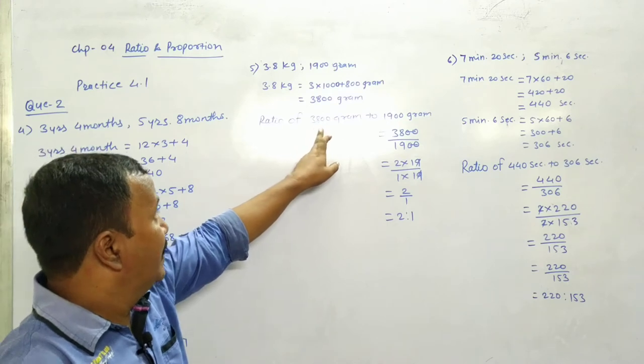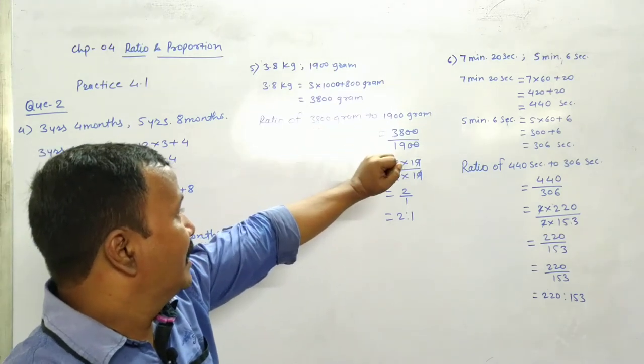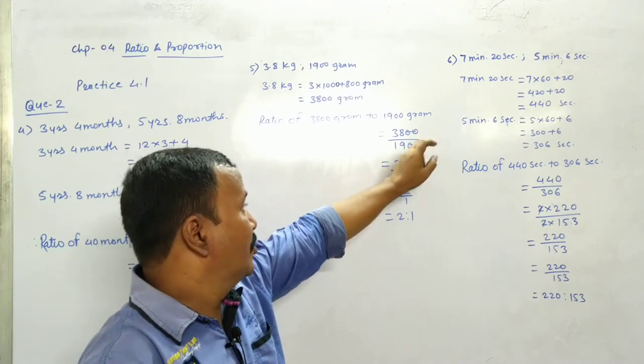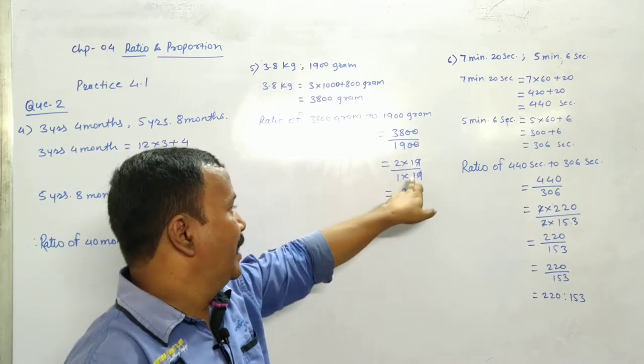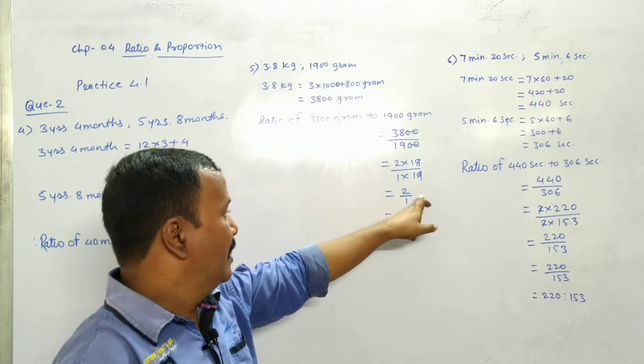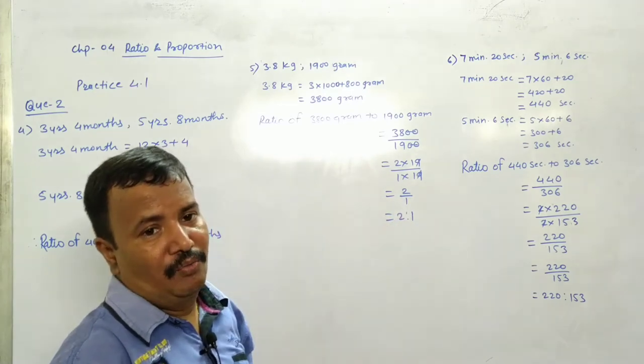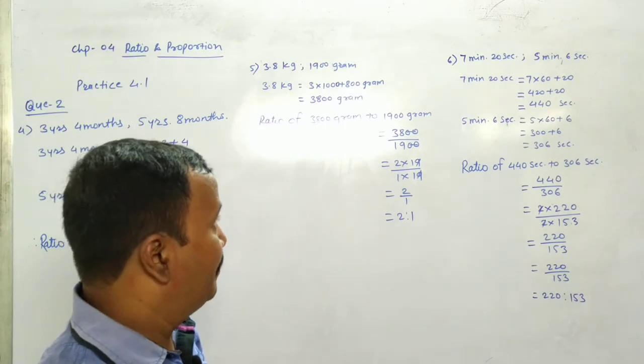Ratio of 3800 grams to 1900 gram. 38 divided by 19. 0, 0 cancel. 2 into 19, 1 into 19. Answer is 2 upon 1. And ratio is 2 is to 1.